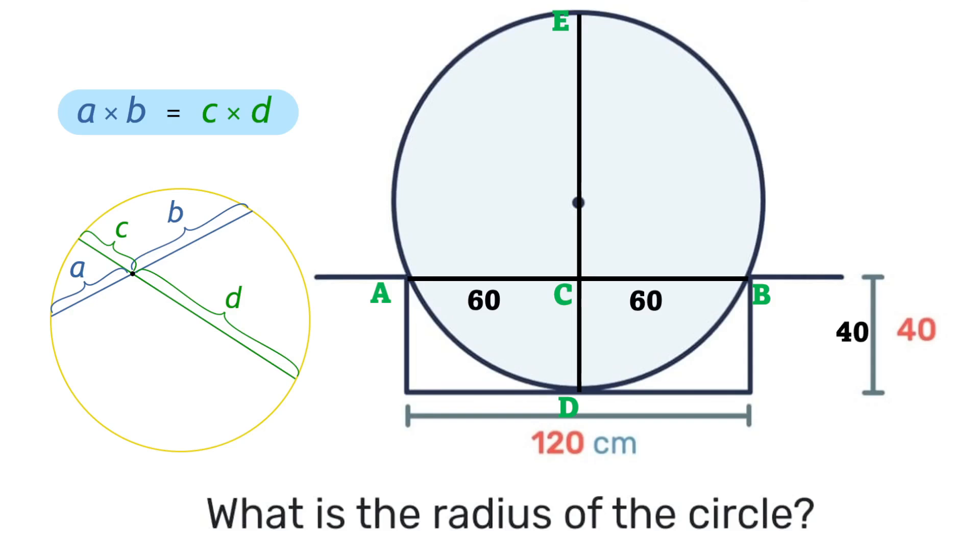Then that 40 on the right will be the same as that line segment DC. Next when we look at that vertical line segment ED, we notice that it is a chord that passes through the center of the circle. So by definition that is a diameter. And also by definition the diameter is two times the radius.